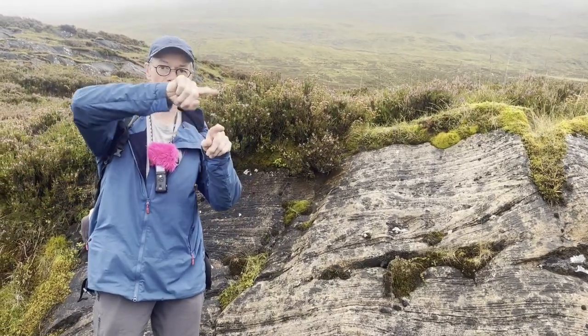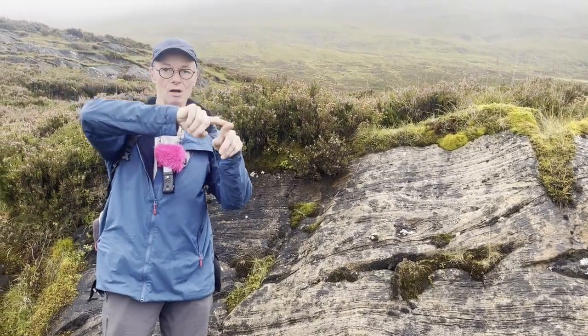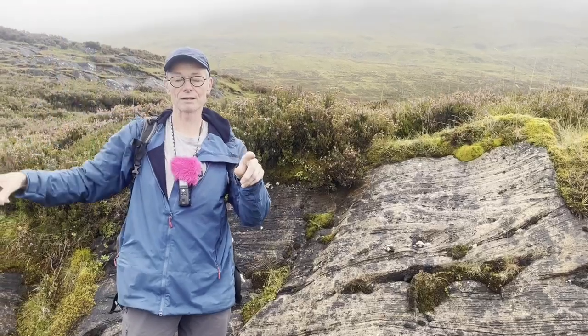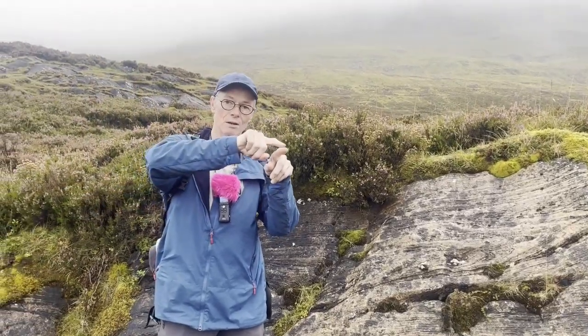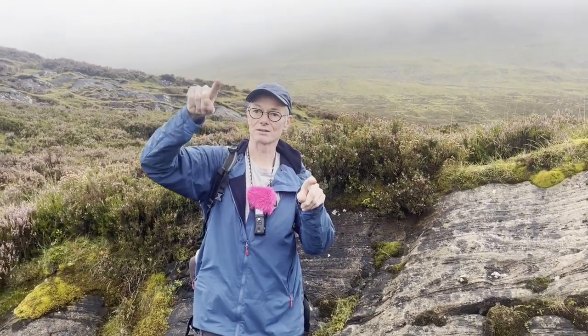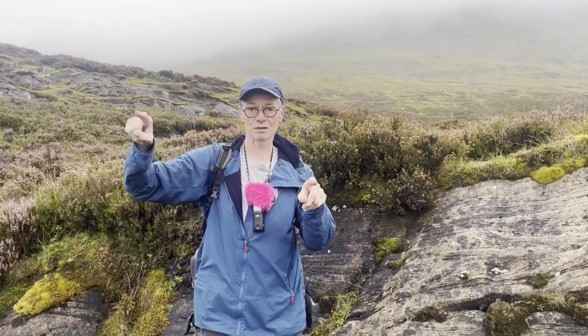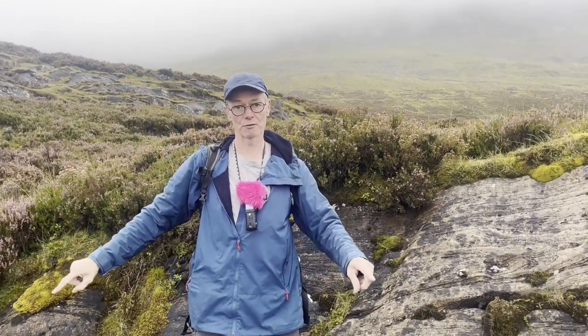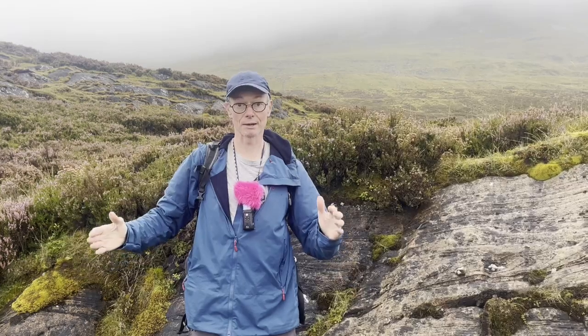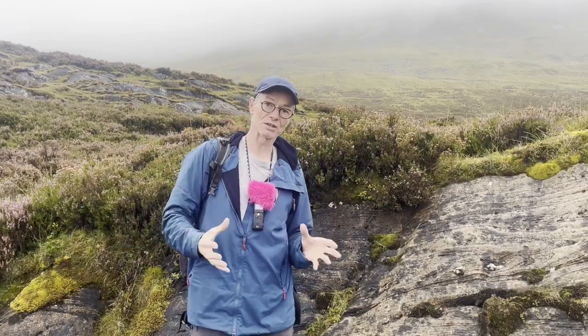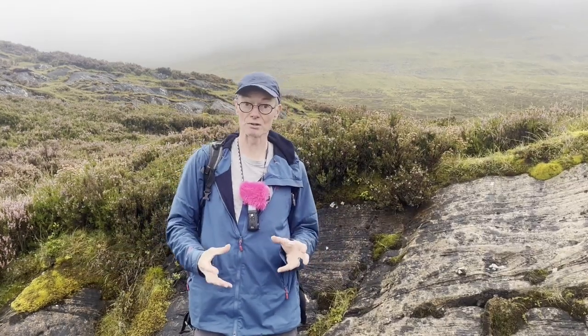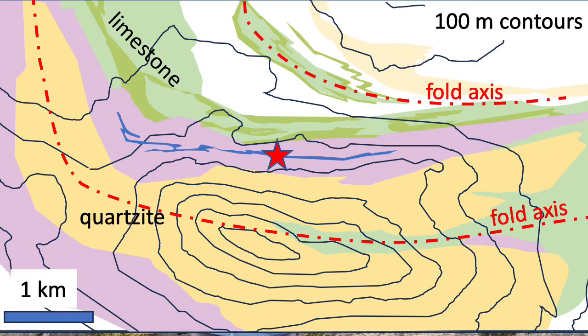So if you have a large anticline like this, locally at a smaller scale you get these features sitting on the hinge of the anticline. We can see this at a much larger scale if we look at the geological map.